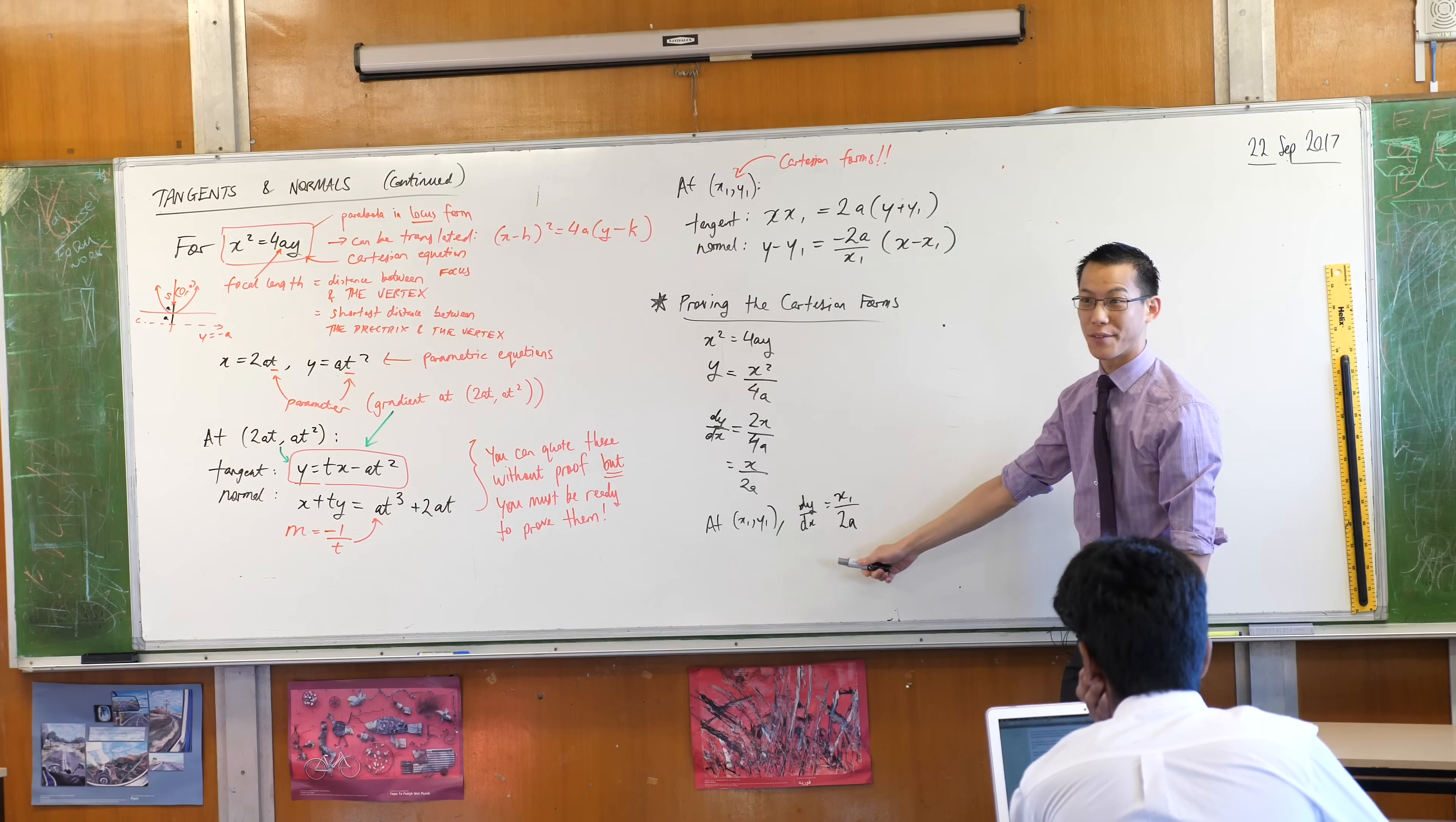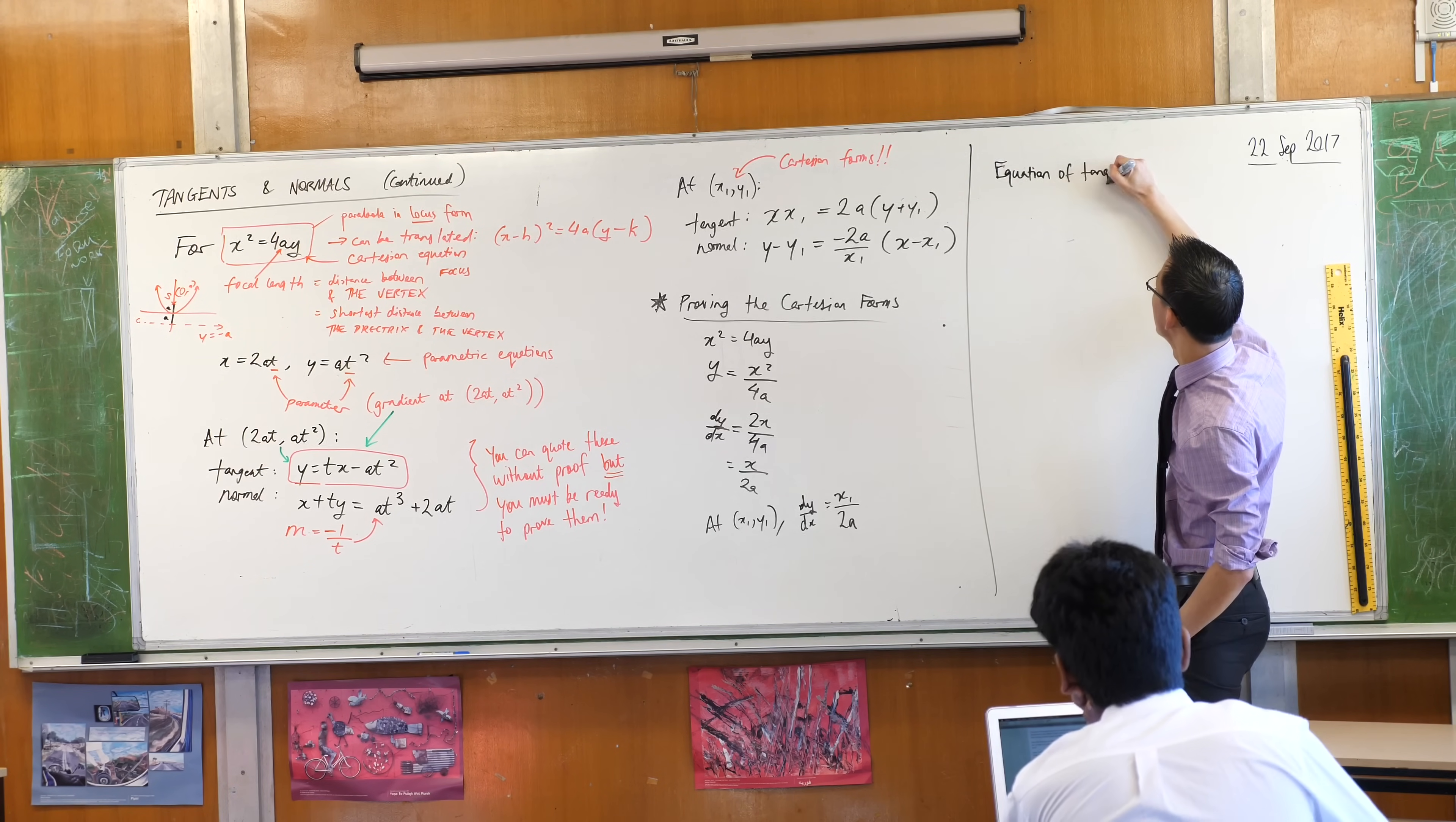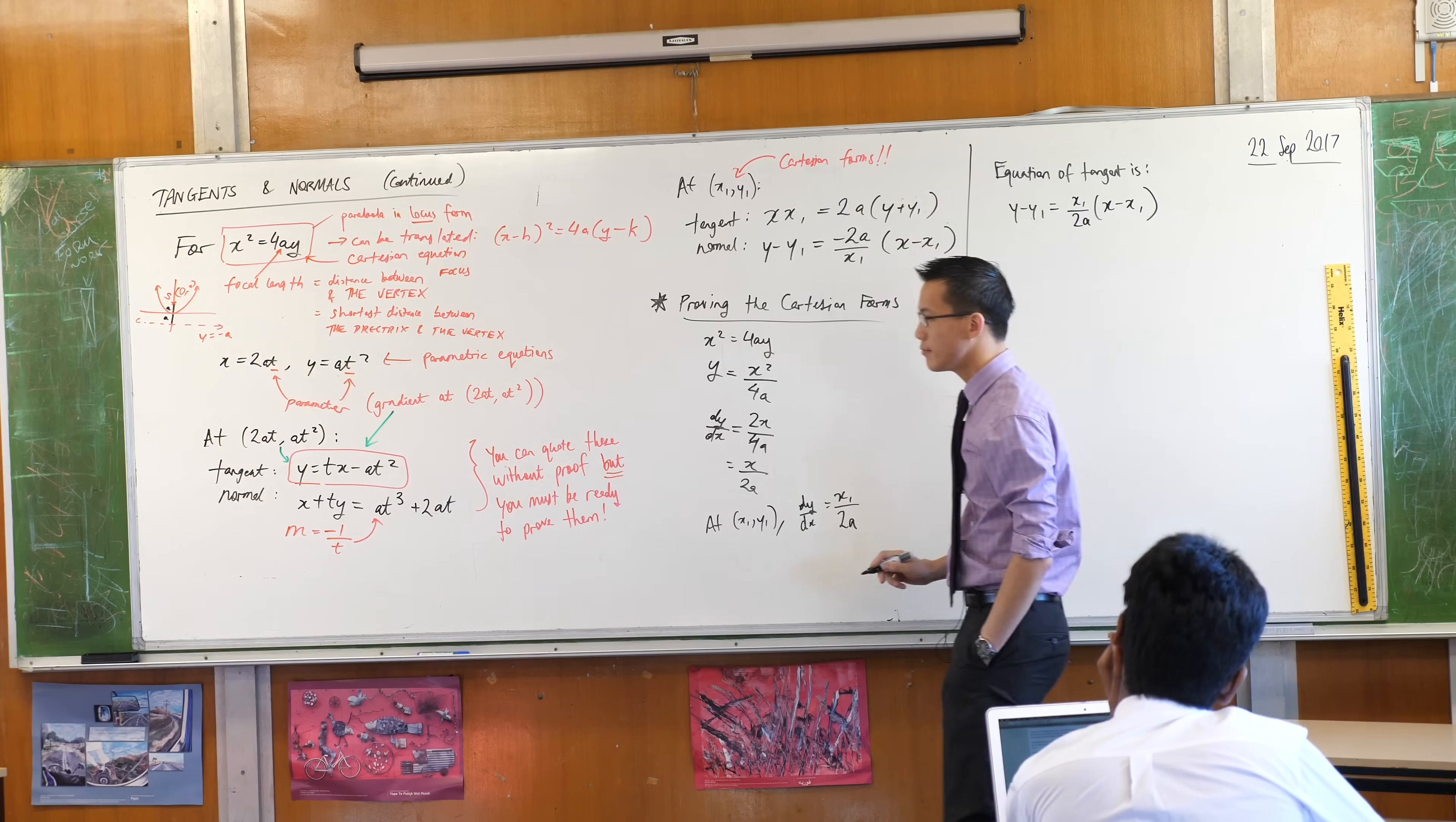x1 on 2a. I have a point. I've got a gradient. That's all I need. What am I going to do with these guys? Point gradient form is really easy, isn't it? So I'm going to say equation of the tangent is? What do we got here? y minus y1 equals... Okay.